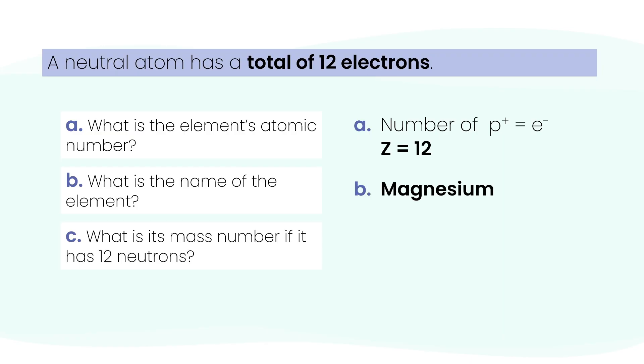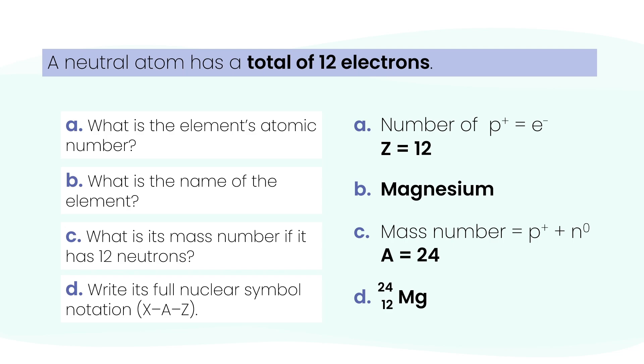For letter C, if this atom has 12 neutrons, what's its mass number? Just add the protons and neutrons: 12 protons plus 12 neutrons equals a mass number of 24. Now let's write its full nuclear symbol notation, the XAZ format. That gives us magnesium-24.